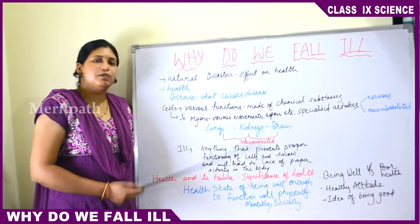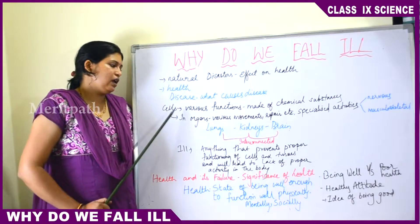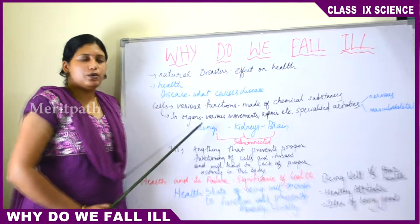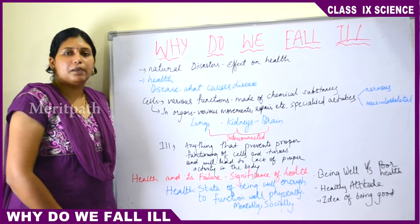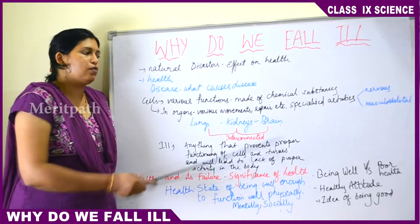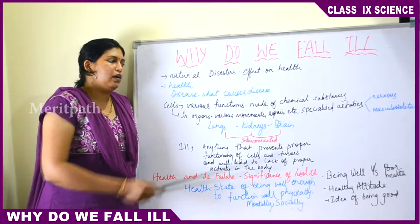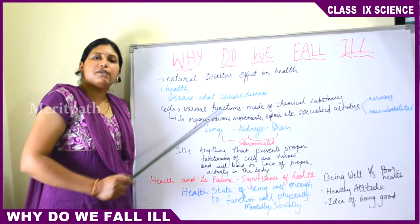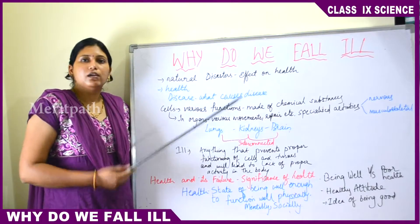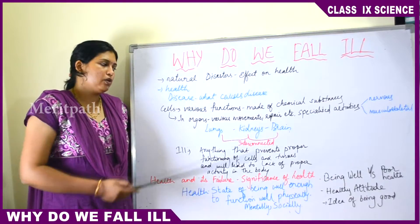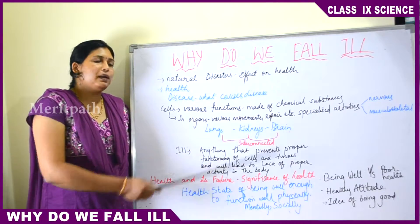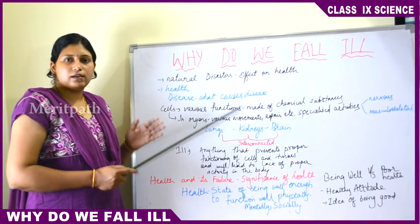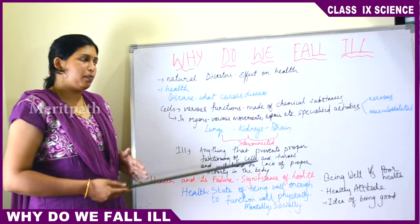Cells also carry out specialized activities in the lungs, kidneys, and brain. The lungs help in the breathing process, the kidneys help in filtration and urine formation, and the brain transfers messages to various parts of the body. All these functions are interconnected — if one part doesn't function properly, it leads to a state of being ill or poor health. All organs must work together properly for the proper functioning of the body.